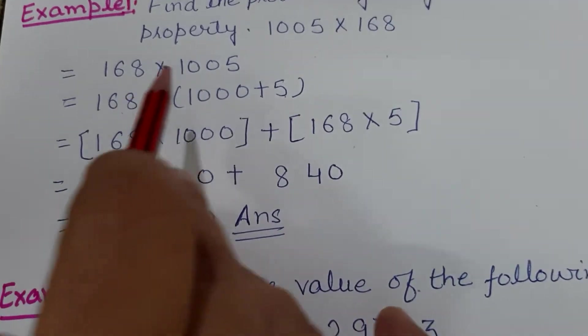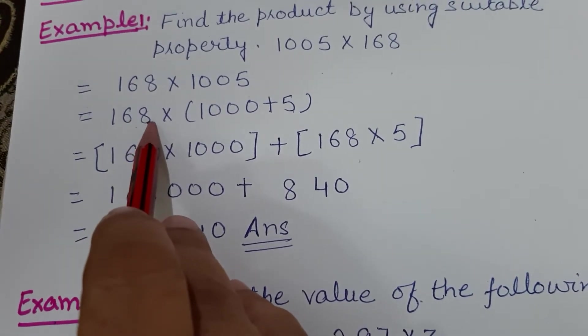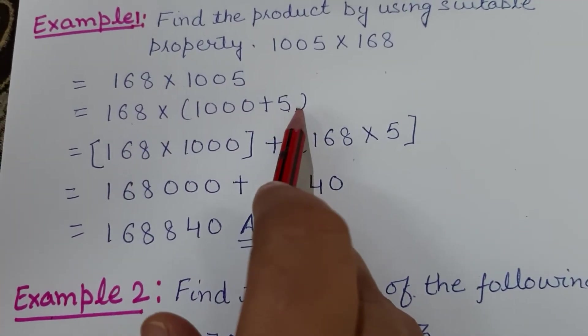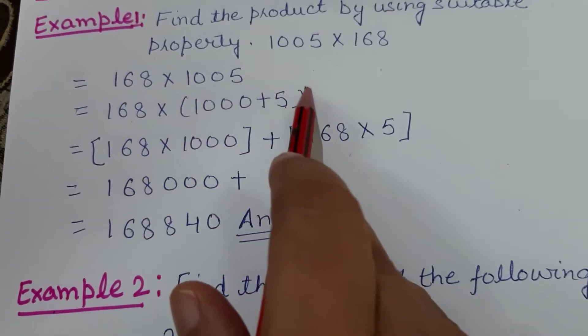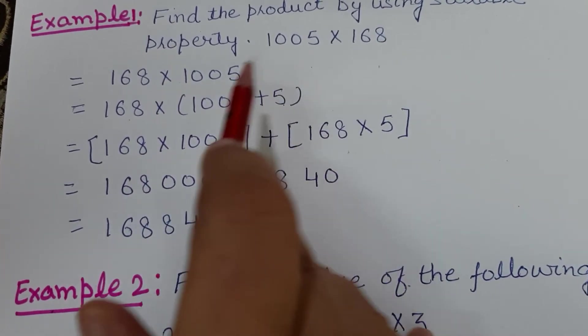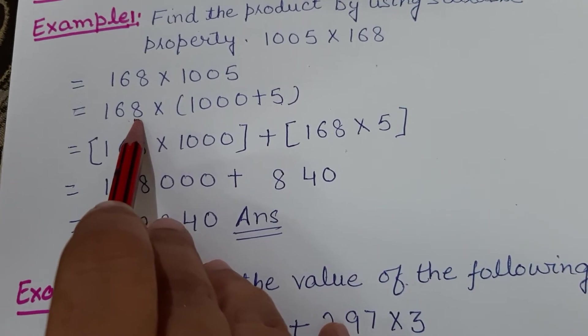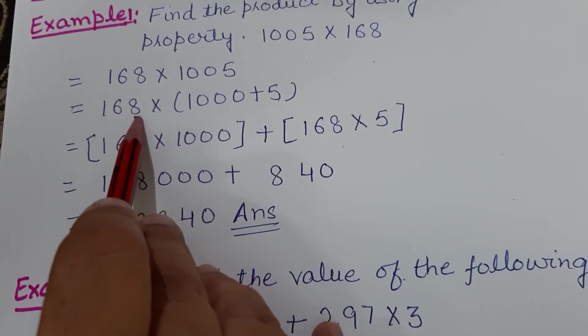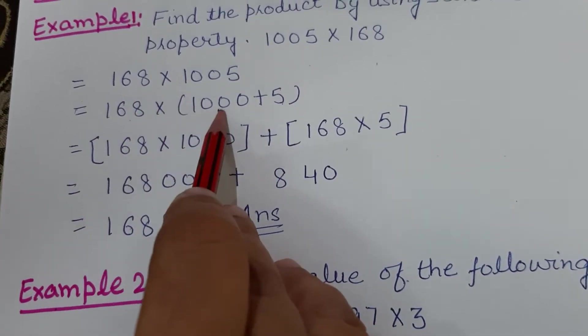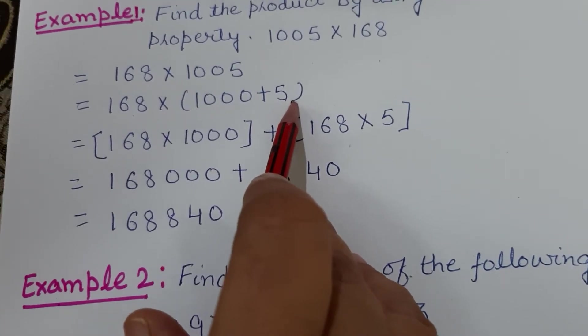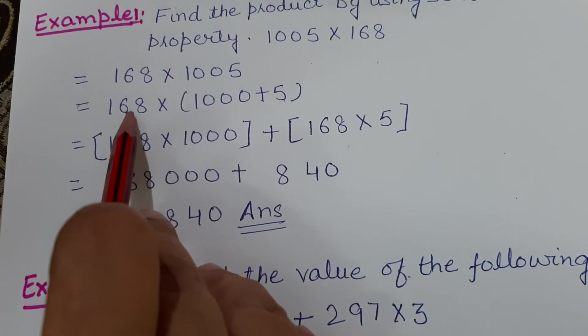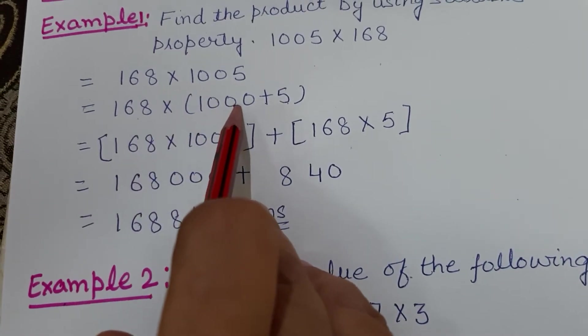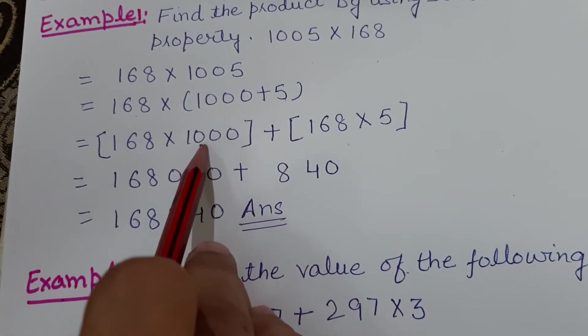These numbers are written in a bracket, so if any number outside is multiplied, it means this number will be multiplied with both these numbers. Let's multiply one by one. First, 168 will be multiplied with 1000. We put it in one bracket because this is one pair.